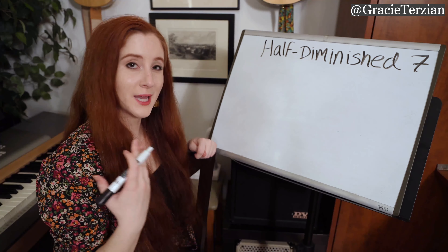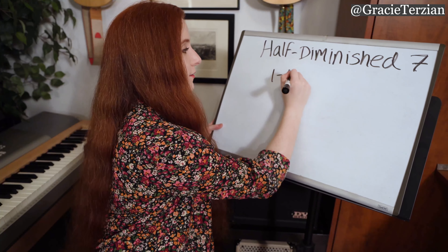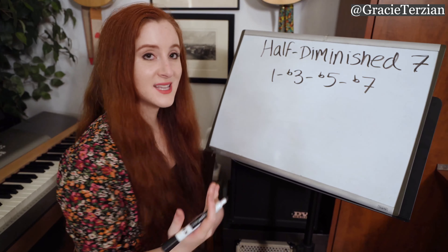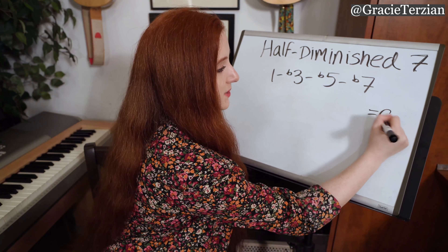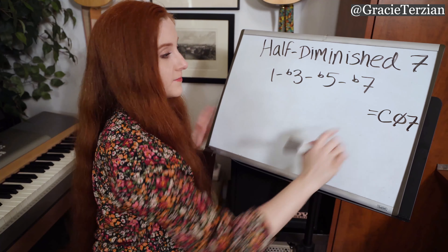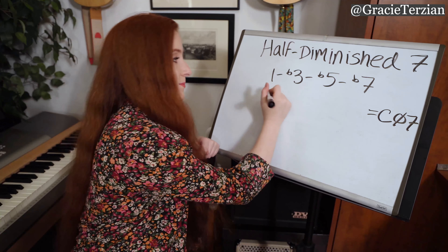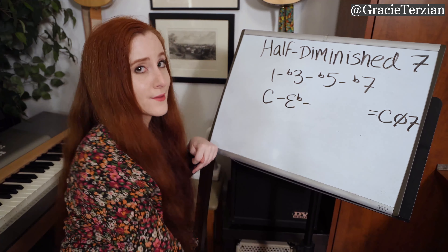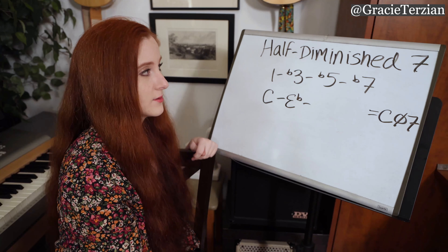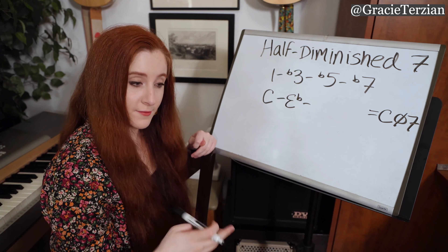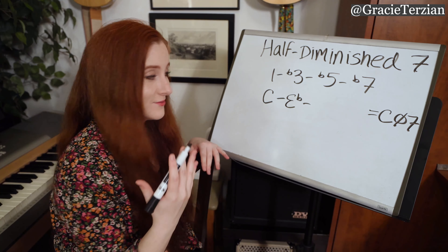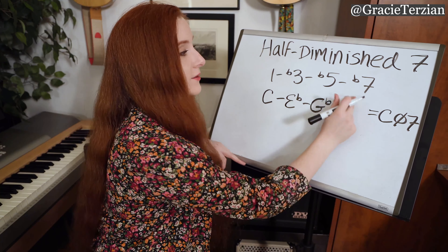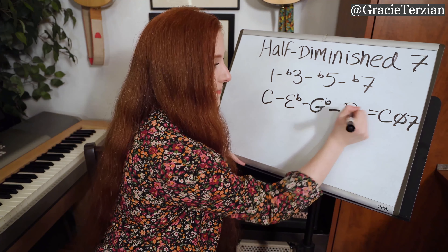Now we're going to look at a half diminished seventh chord. The formula is 1, flat 3, flat 5, and flat 7. For a C half diminished seven chord: the 1 is C, the flat third is E flat, the flat fifth — normally G, but flattened — becomes G flat, and the flat seventh is B flat.